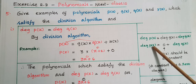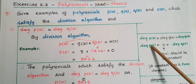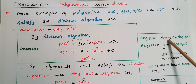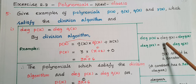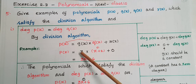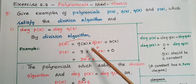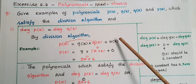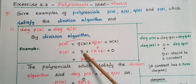We know degree of p(x) = degree of g(x) + degree of q(x). If degree of p(x) equals degree of q(x), then degree of g(x) must be 0. Degree 0 means g(x) is a constant. So assume g(x) = 3. Take q(x) = x + 2 and r(x) = 0.